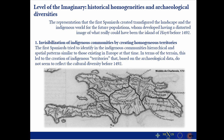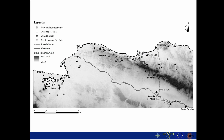Here, the representation that the first Spaniards created transfigured the landscape and the indigenous world not only for the past population, but also for future populations who developed a distorted image of what the island of Haiti could really have been before 1492. I highlight two points within this idea. The first is the invisibilization of indigenous communities by creating homogenous territories. The first Spanish tried to identify indigenous communities' hierarchical and spatial patterns similar to those existing in Europe at the time, which led to the creation of indigenous territories that — based on the archaeological data — do not seem to reflect the cultural diversity before 1492, at least not the diversity observed in regional patterns through archaeological data.